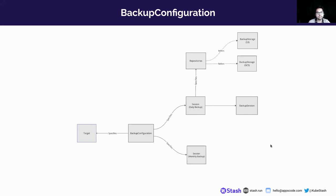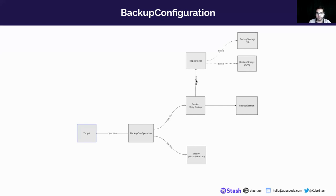Here is the simplified version of the backup configuration. The backup configuration specifies the target and multiple sessions — you can provide multiple schedules in these sessions. Each session can specify multiple repositories, so if you want to store your data in multiple backends, you can provide multiple repositories referring to different backup storages.